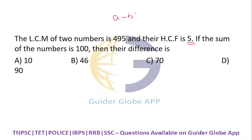There is one formula: (a+b)² minus (a-b)² equals 4ab.